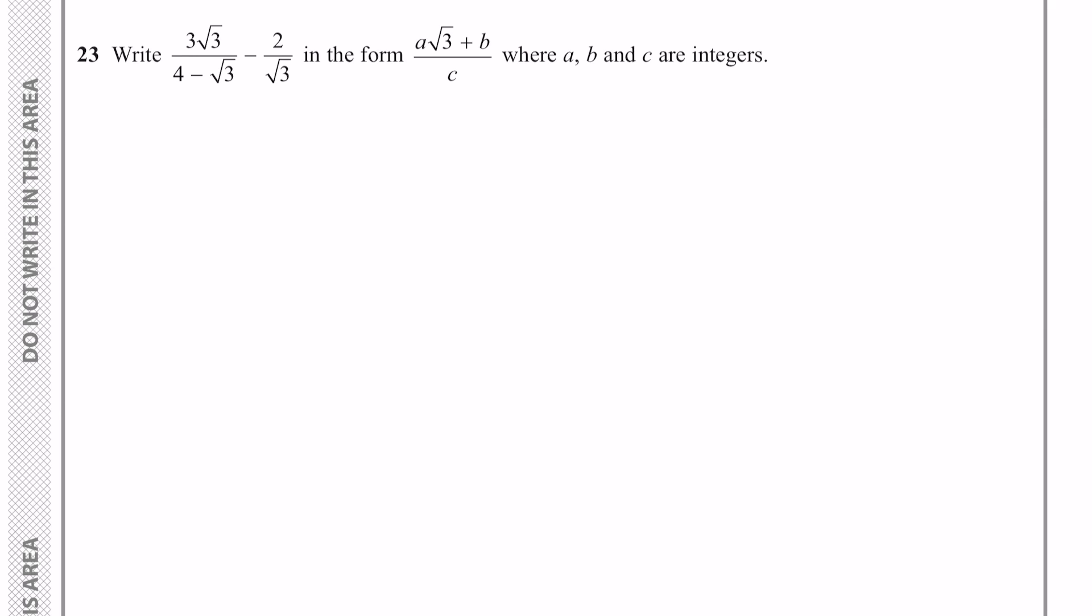So for this problem that involves multiplying the first fraction by √3. So we have 3√3 over 4-√3 and we want to multiply that by this √3 here. So we multiply the numerator and denominator by √3. We can do that because that's the same thing as multiplying by 1, so we haven't actually changed anything.